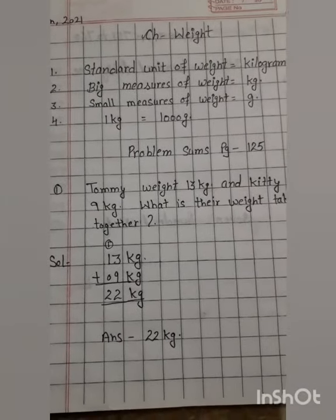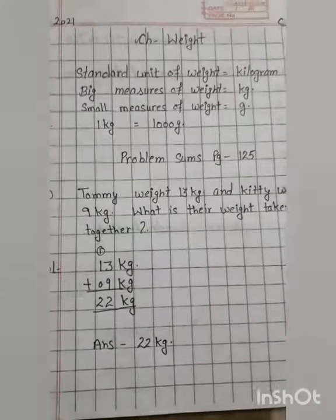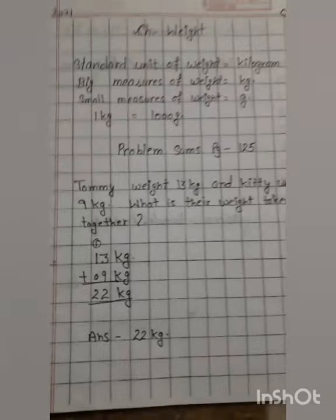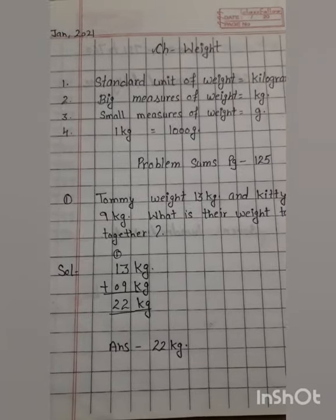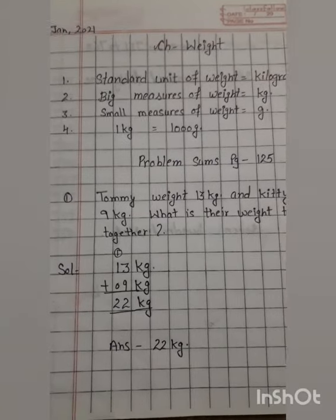Fourth point: one kg is equal to one thousand grams. If an object's weight is one thousand grams, it means its weight is one kg. Both are the same thing.